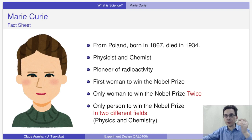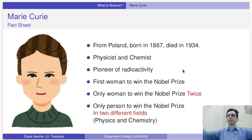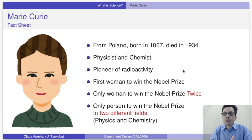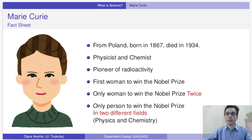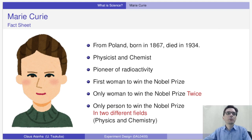Who is Marie Curie? I believe many of you have heard of her before. She is a scientist born in Poland in 1867, who died in 1934 — quite young, as we'll discuss later. She was a physicist and chemist, and a pioneer in the study of radioactivity. A lot of what we understand about radioactivity comes from her research. Her achievements are highly celebrated: she was the first woman to win the Nobel Prize, the only woman to win it twice, and the only person — man or woman — to win the Nobel Prize in two different disciplines: physics and chemistry. The prizes Curie received are a real testament to the importance and relevance of her research.